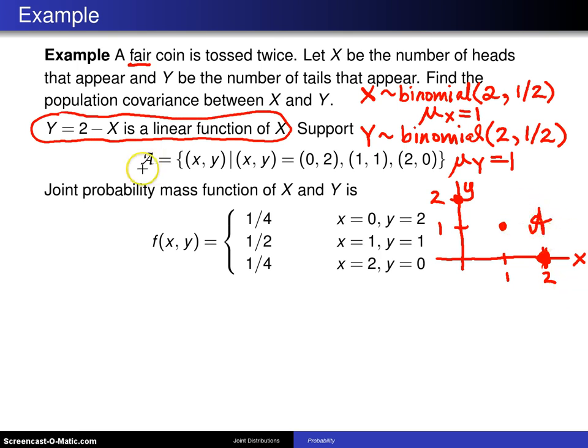This script A can be written out formally as the set of all (x, y) such that (x, y) equals either (0, 2), (1, 1), or (2, 0).